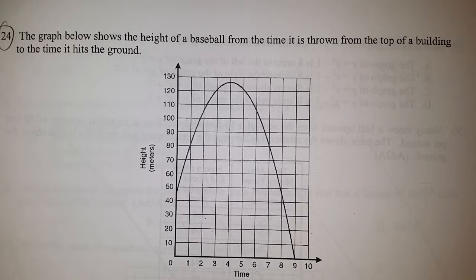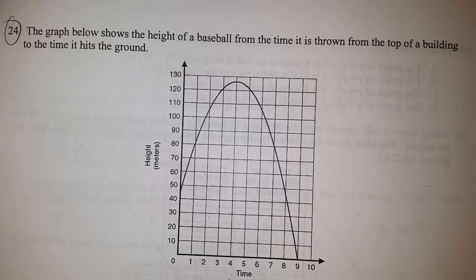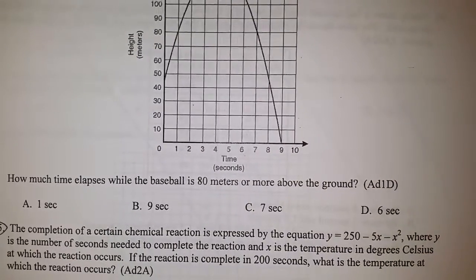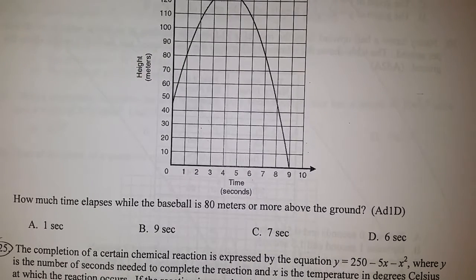Okay, we're moving on to number 24 in our Thursday STAAR review. The graph below shows the height of a baseball from the time it's thrown from the top of a building to the time it hits the ground, and the question is asking how much time elapses while the baseball is 80 meters or more above the ground.